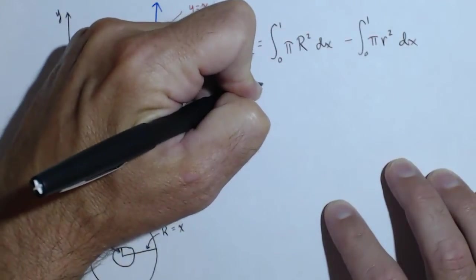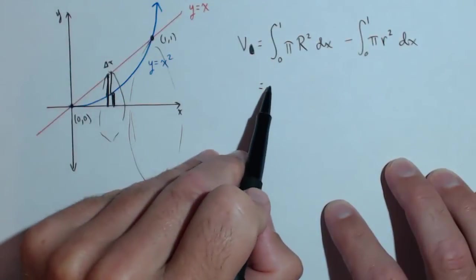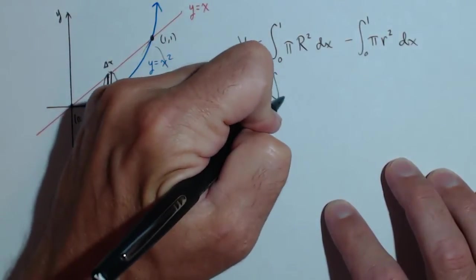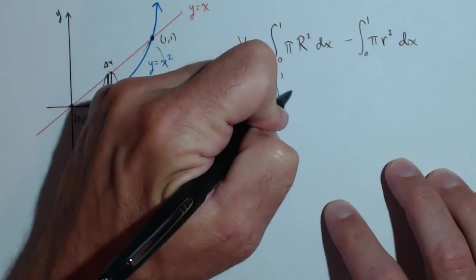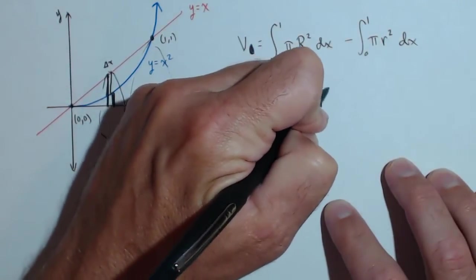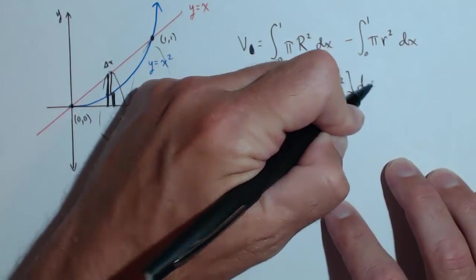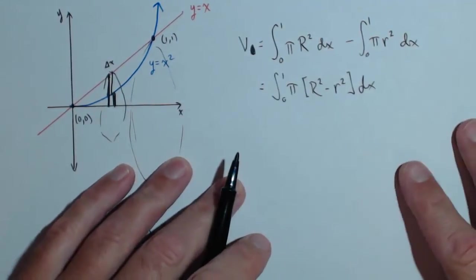So what we could do is put these in a single integral, which is a lot of times how you'll see the formula. 0 to 1 of pi times r squared minus r squared dx, where r is a function of x.